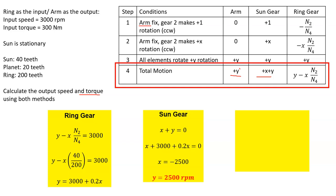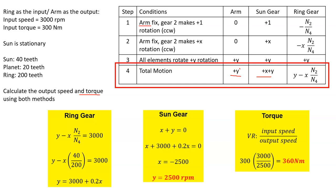We went from 3,000 rpm and stepped it down to 2,500 in underdrive, as expected. For the torque, the rules of velocity ratio apply — torque has an inverse relationship with speed. So the output torque is 300 Newton meters × (3,000 / 2,500) = 360 Newton meters. That's the tabular method result — velocity went down and torque went up, as expected in an underdrive condition.